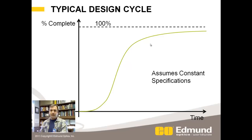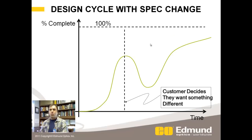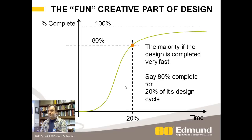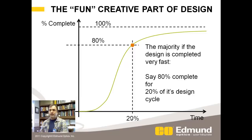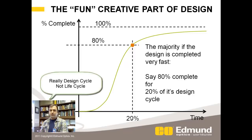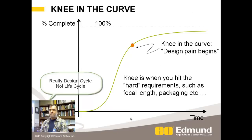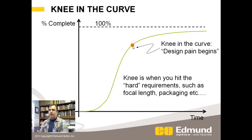This assumes constant specifications. What happens is your customer decides they want something different at some point, and you rapidly realize you've got to start back over — it actually begins back down here. The fun creative part of the design — getting to an 80% solution — may take only 20% of the time. The majority of the work to get your solution to production takes place pretty fast compared to the total life cycle. And that's when you get this knee in the curve, which is kind of when the design pain begins.